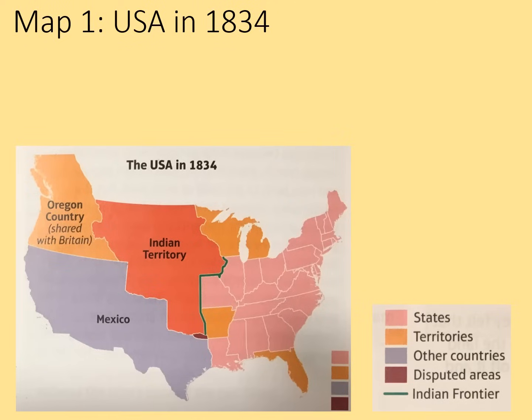Let's have a look at a couple of maps that show these changes. The pink areas, mostly to the east, are the states of the USA as they existed in 1834. Territories which had not yet become states are shown in orange. Other countries, including Mexico, had claimed a huge swathe of land in the west and central part of North America. There are also disputed areas being fought over. The Indian frontier is shown in green, with Indian territory in a darker orange.